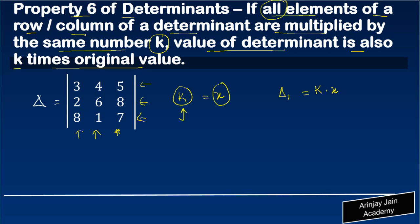Right, so let's say for example we have delta as this, and we make delta 1 by multiplying row 1 by 2. So let's say the value of k is equal to 2. So we get 6, 8, 10 because you multiply this row by 2, and then you have 2, 6, 8, 1, 7.